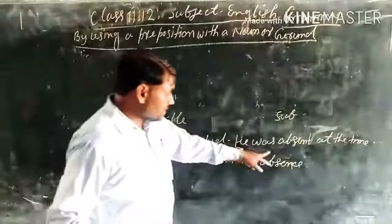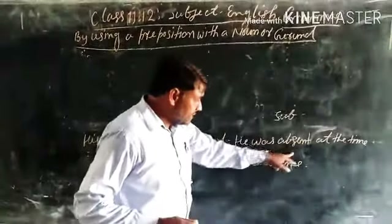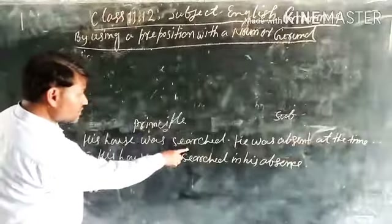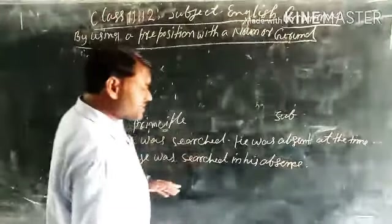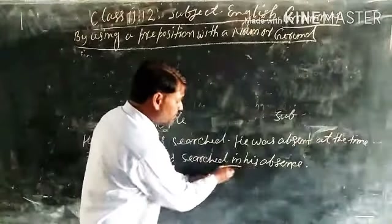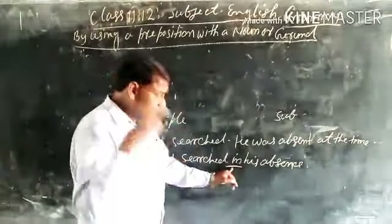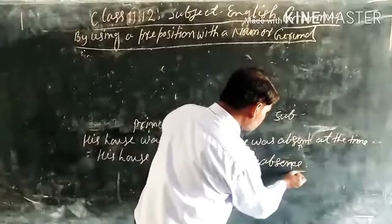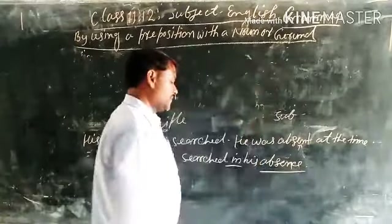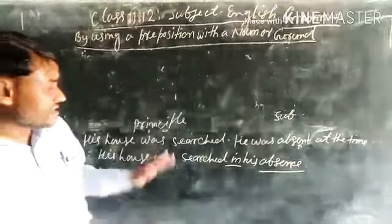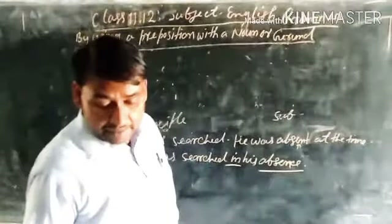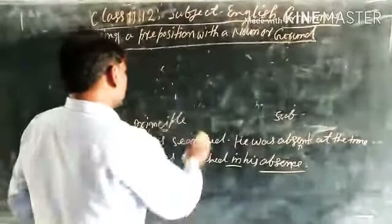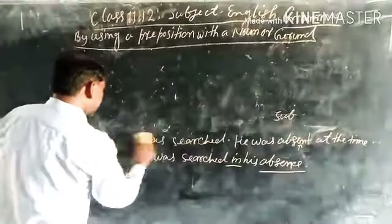After identifying the clauses, in the subordinate clause you make changes. So, 'His house was searched' remains unchanged. Then you add the appropriate preposition 'in,' and the verb 'absent' is converted to the noun form. The combined sentence becomes: 'His house was searched in his absence.'